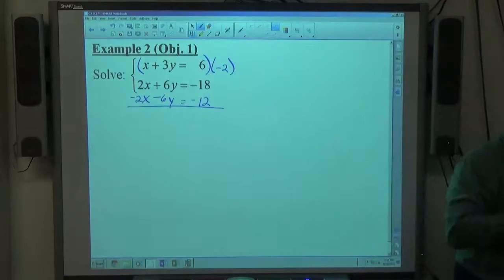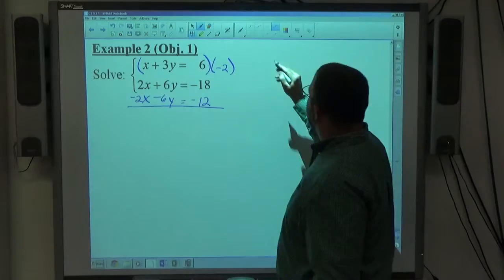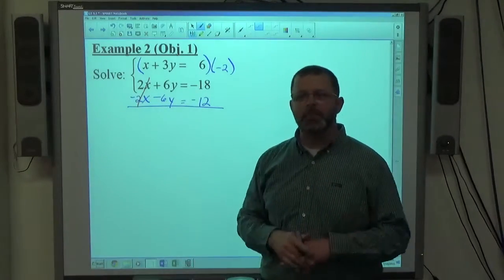So everything on top gets multiplied by negative 2 and creates that new equation on the bottom, the blue equation. And as I expected, 2x minus 2x cancels. So the elimination that I wanted to happen happened.